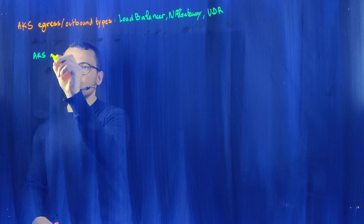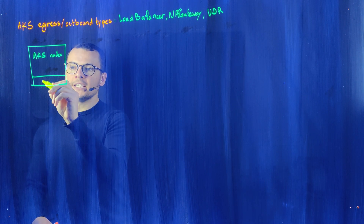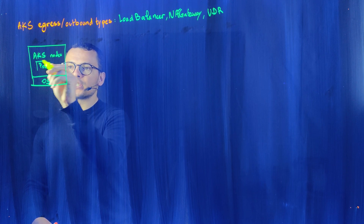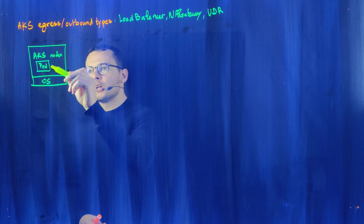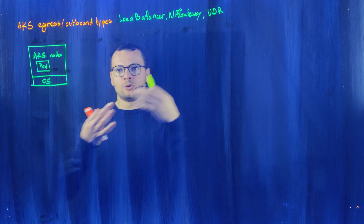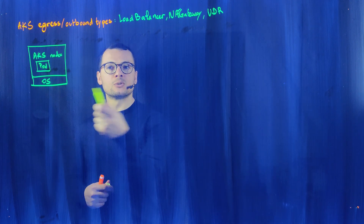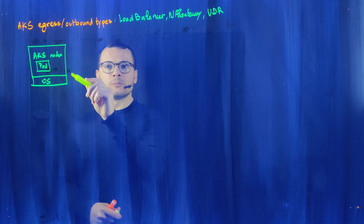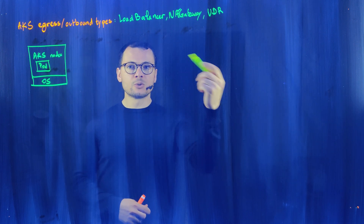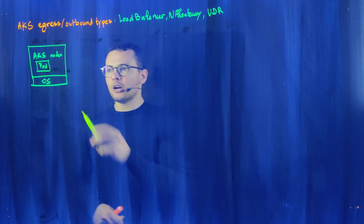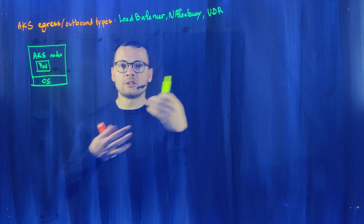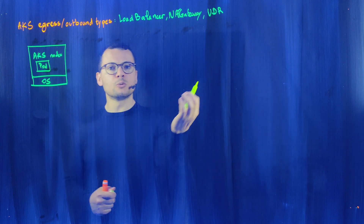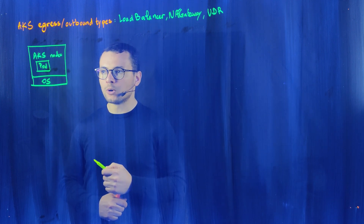Within the AKS nodes, we have the OS and then one or multiple pods for the application. Both components need to connect to resources outside the cluster. The OS needs to get OS updates, and the pods need to connect to external APIs, or pull images from container registries like MCR, Azure Container Registry, or Docker Hub.